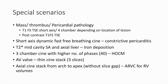Certain special sequences are needed for other cardiac conditions. In cases of mass, thrombus, or pericardial pathology, a T1 and T2 double inversion TSE sequence in short axis or 4-chamber depending on lesion location can be obtained, along with a post-contrast T1 fat-sat TSE sequence. A short axis dynamic fast free-breathing cine can be obtained to look for constrictive pericarditis, whereas T2* imaging of the myocardium and liver can be obtained to quantify iron deposition. A 3-chamber cine with a higher number of phases up to 40 can be taken in HOCM to look for systolic anterior motion of the anterior mitral leaflet. AV valves can be imaged through cine sequences with a thin stack, and axial cine stack can be used for RV volume quantification.